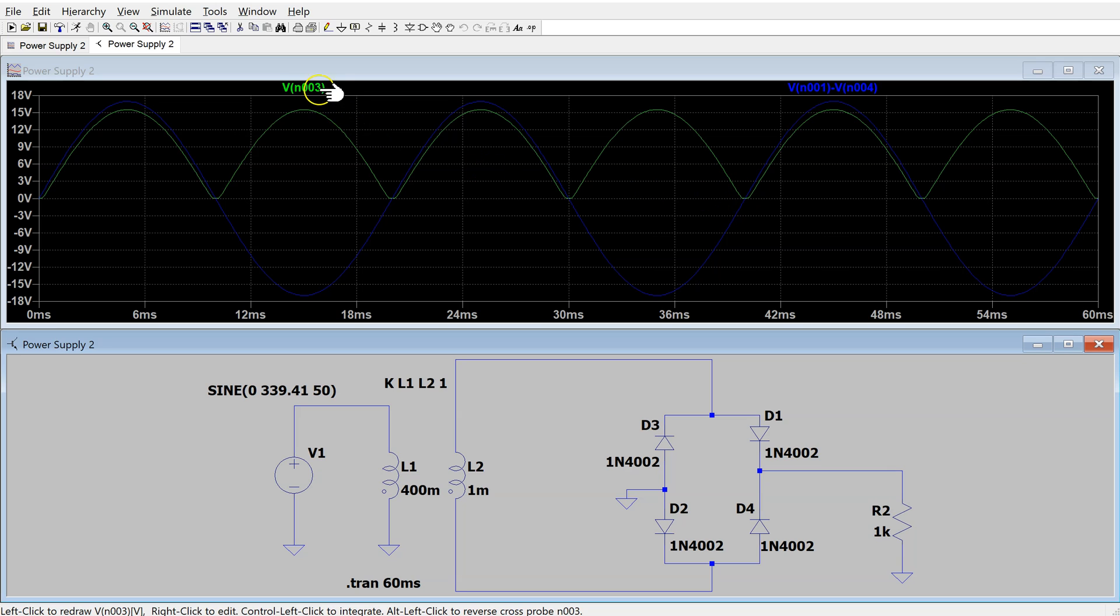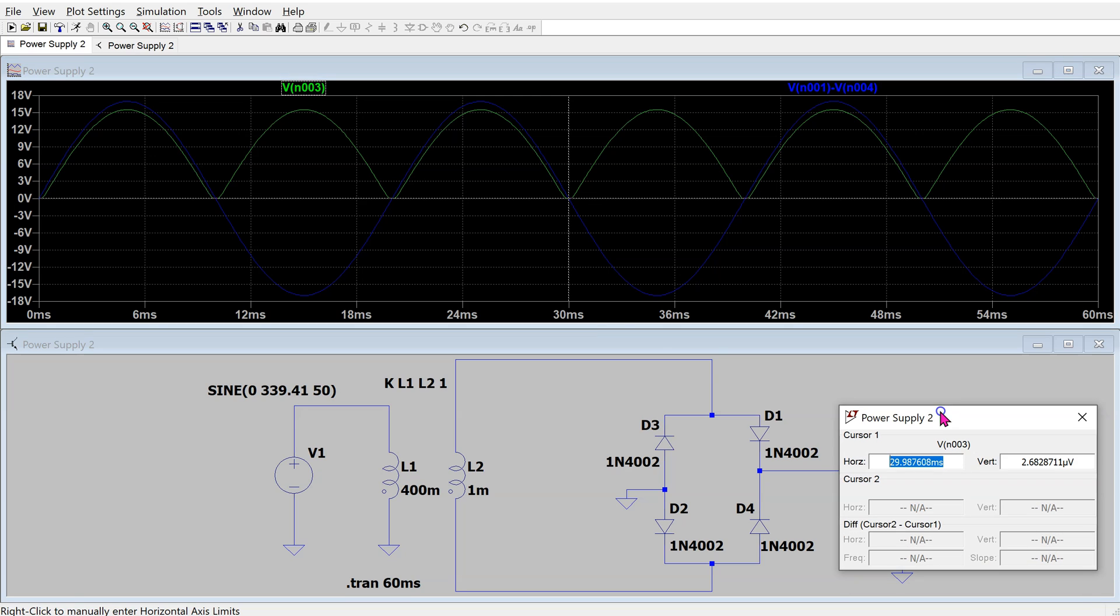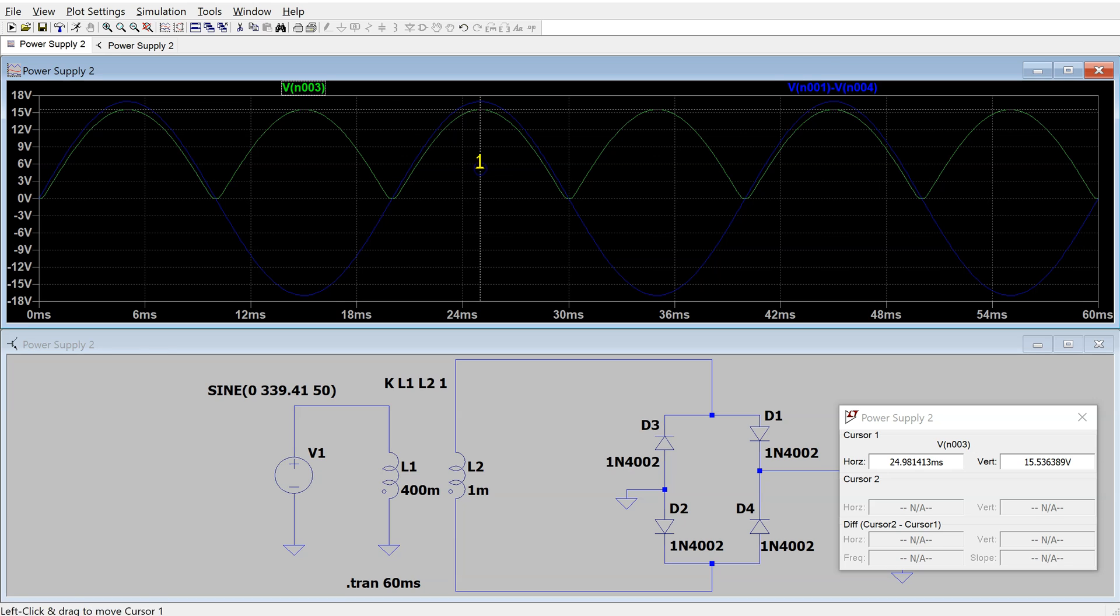We can enable the cursor by right-clicking any of the labels here. We can position the cursor at the peak value. We can see that the input to the bridge rectifier is an approximately 17 volt peak signal and the output voltage peak is about 15.53 volts, which is approximately 1.4 volts less than V_input peak as expected.